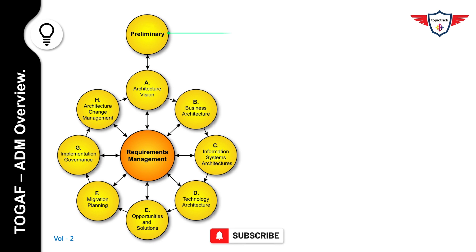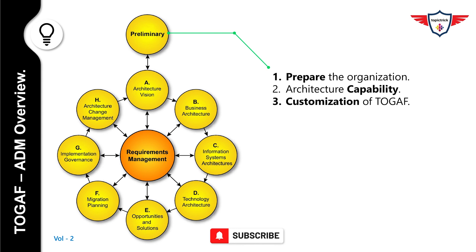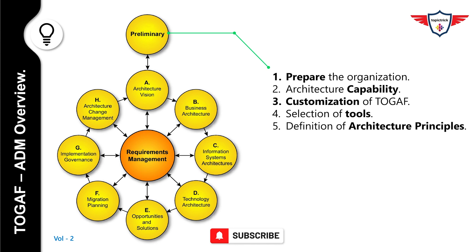The first phase is the Preliminary Phase. In this phase, you prepare the organization for successful TOGAF architecture projects. Undertake the preparation and initiation activities required to create an architecture capability, which includes the customization of TOGAF, selection of tools, and the definition of architecture principles.